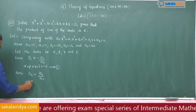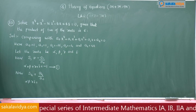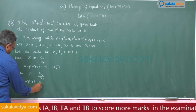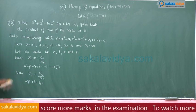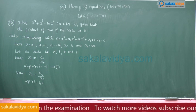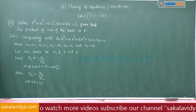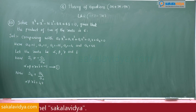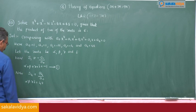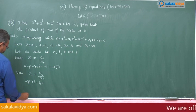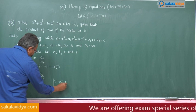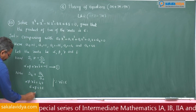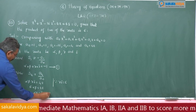The product of all roots, alpha times beta times gamma times delta, is equal to A4 by A0, which is 48 by 1, equal to 48. Now, the product of two of the roots is given as 6. Let us consider gamma delta equal to 6, so alpha beta equals 48 divided by 6, which gives alpha beta equal to 8. Call this equation 2.